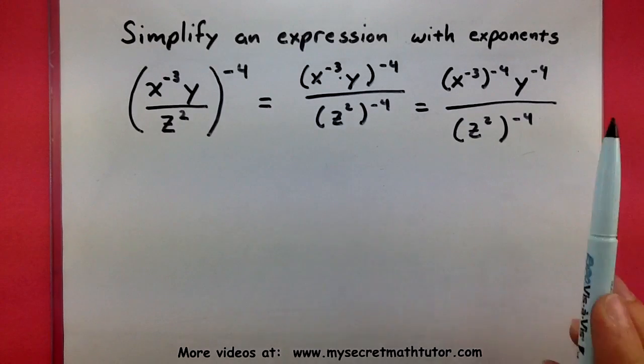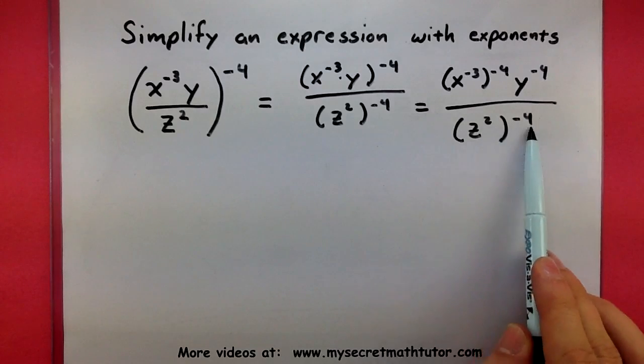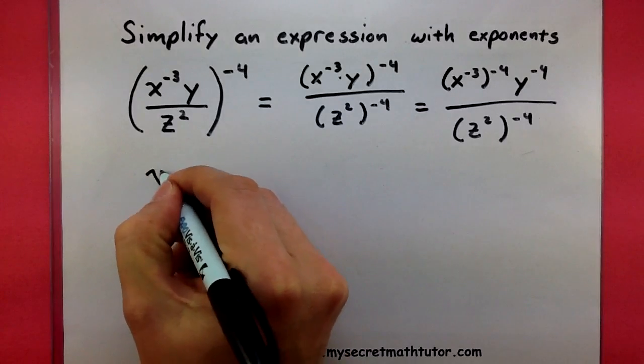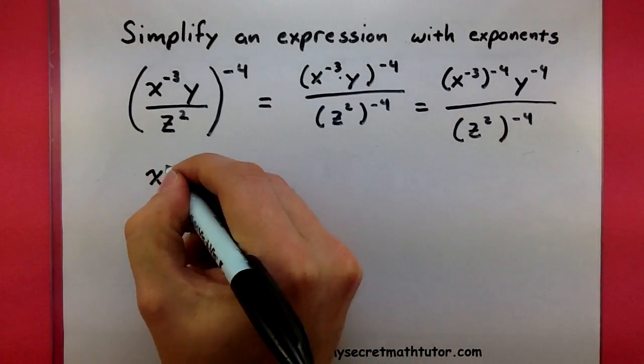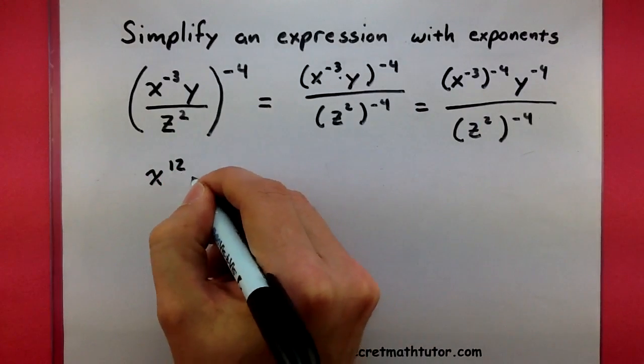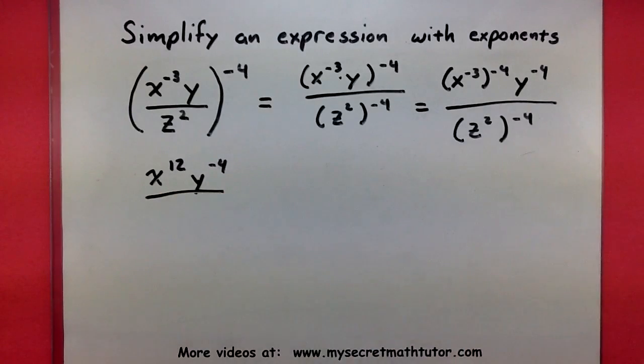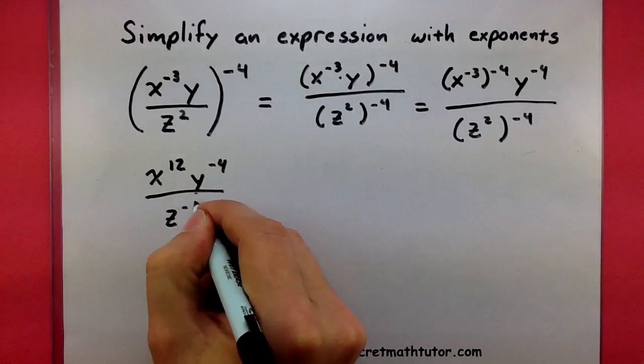Now according to the power rule, I can multiply these two exponents together. Alright, so let's do that for the x and for the z. Negative 3 times negative 4 gives me a positive 12. And down below 2 times negative 4, a negative 8.